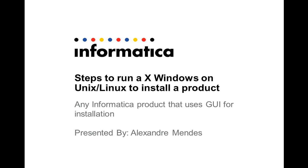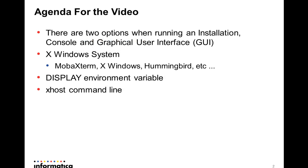The agenda is as follows: there are two options when running an installation — you can install a product by console mode or graphical user interface mode. When you are going to use the GUI, you need an X Windows system such as MobaXterm, Xwindows Hummingbird, etc. There are a bunch of available tools that help with that. You need to be careful about the DISPLAY environment variable and also about the xhost command line.